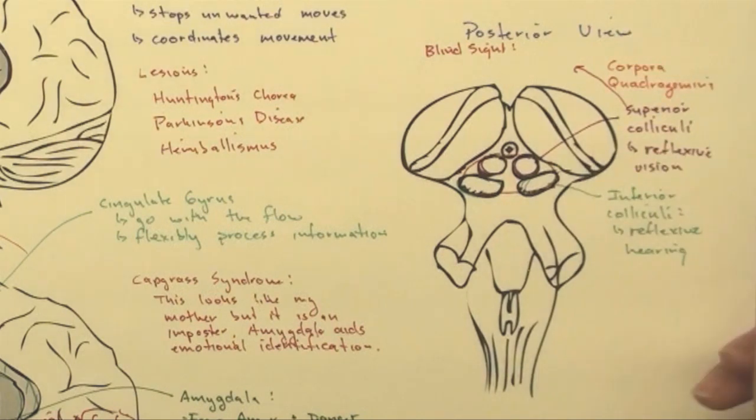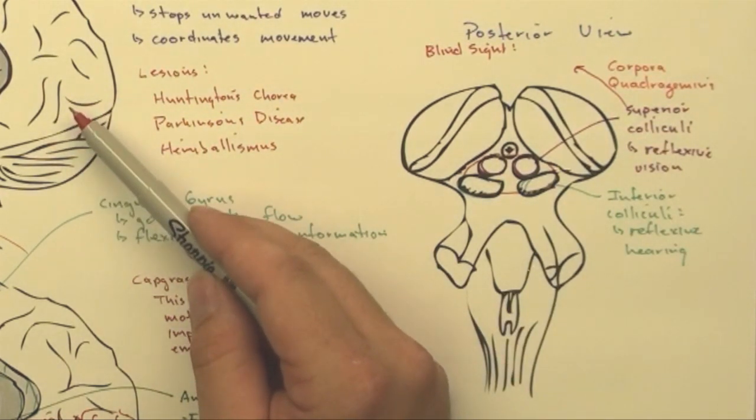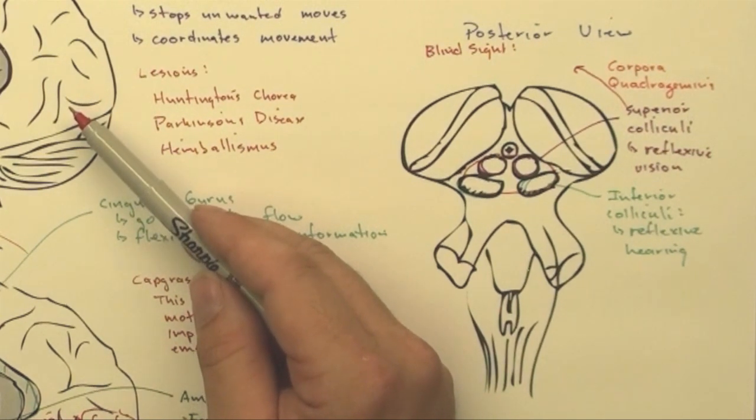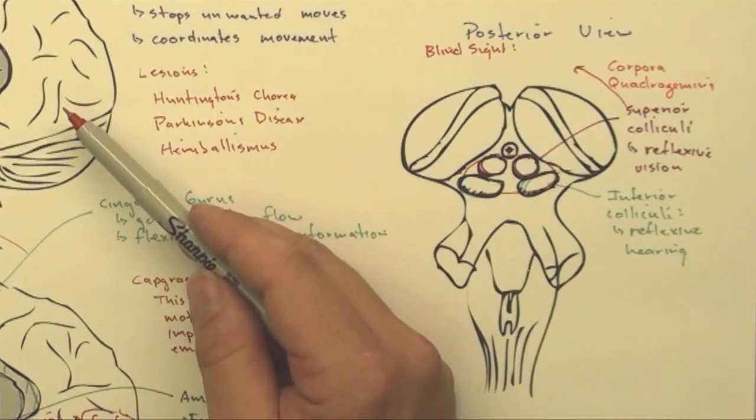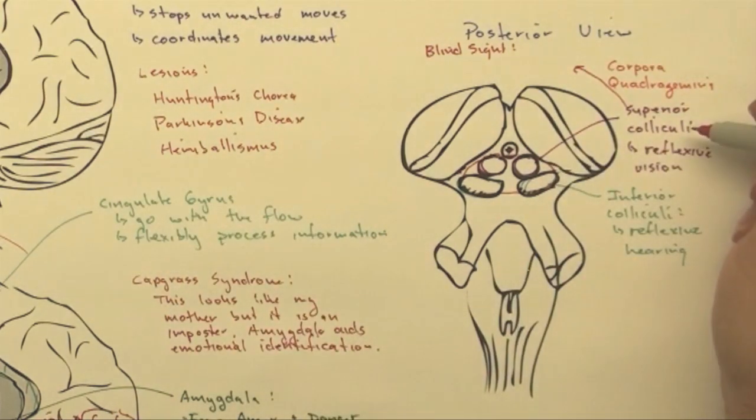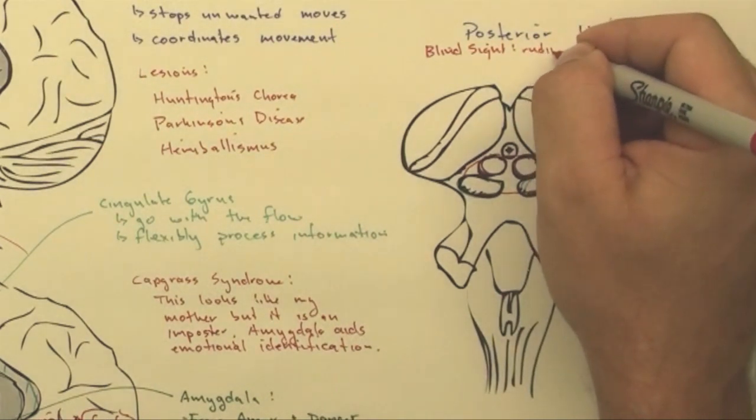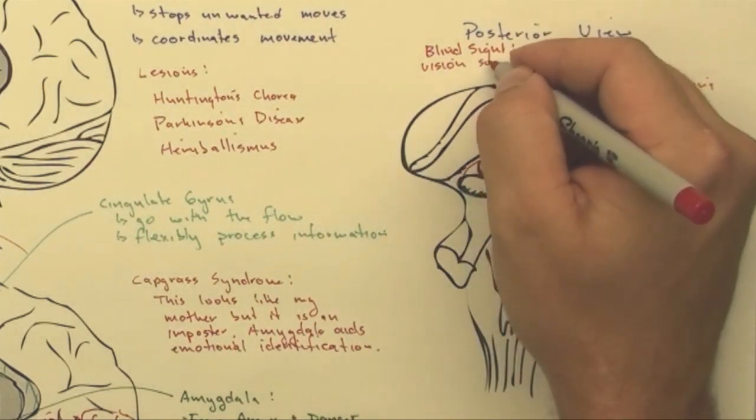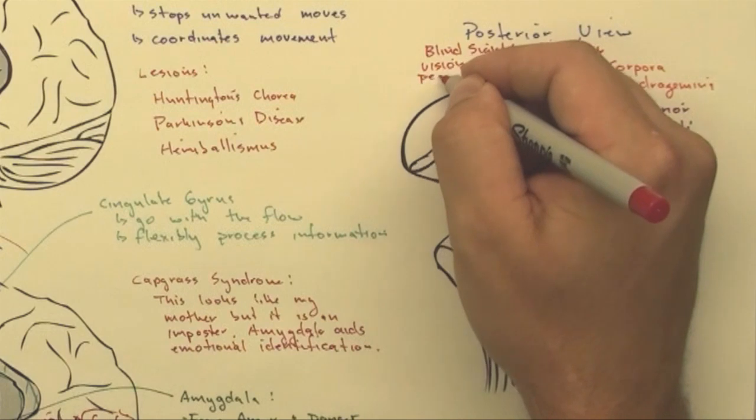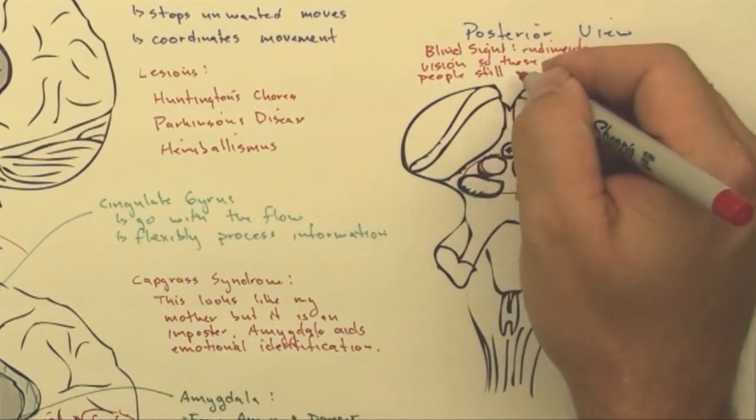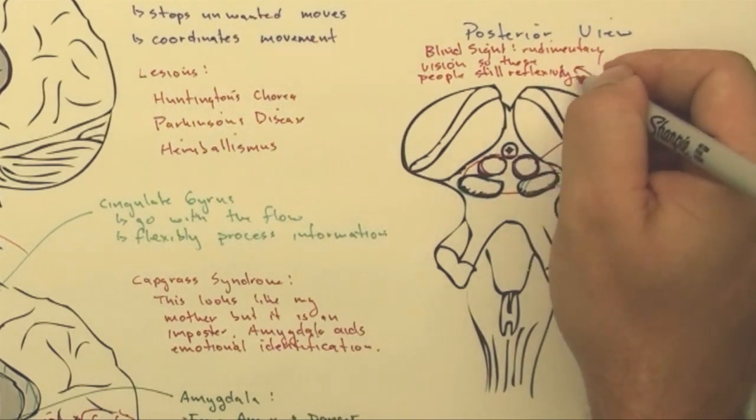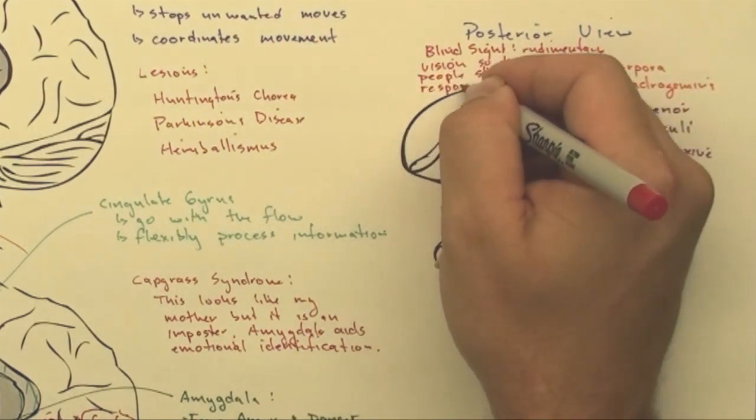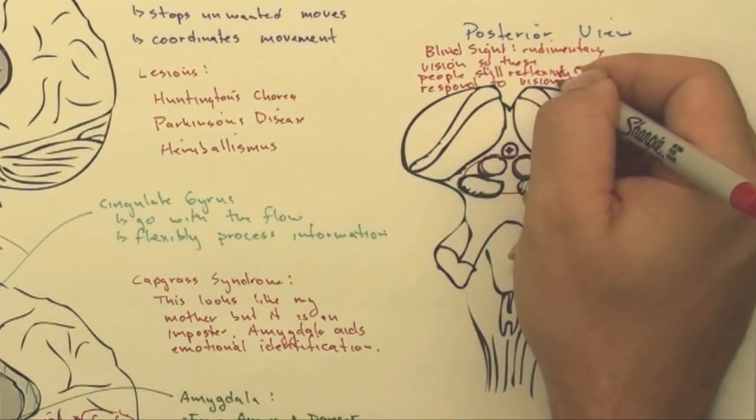And that is, if you've got damage to the cortex, then you can't see. But these people can still respond reflexively to sight. Or maybe a better way to say this is, if you shine a flashlight at the wall, they can find where that beam is shining on the wall. And it's because the superior colliculae has very rudimentary vision. So these people will still have visual reflexes, reflexively respond to vision. So they'd still be able to jump back on the curb.